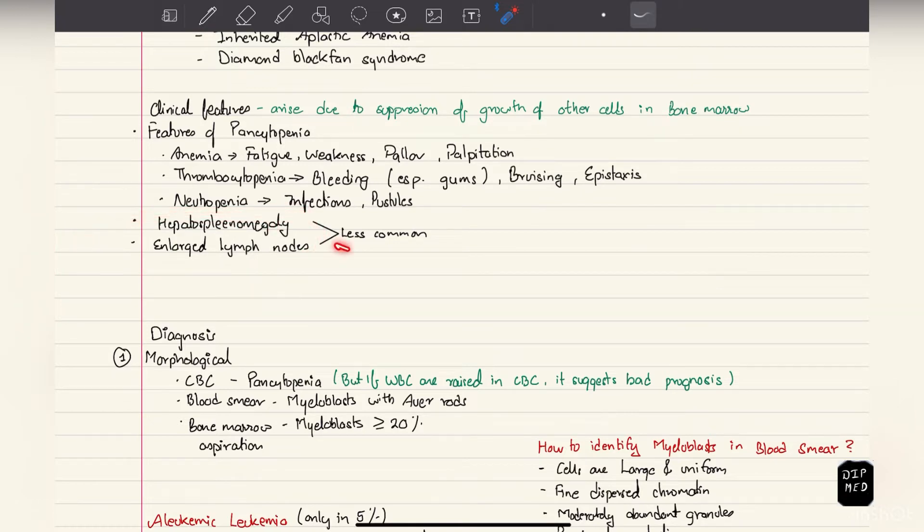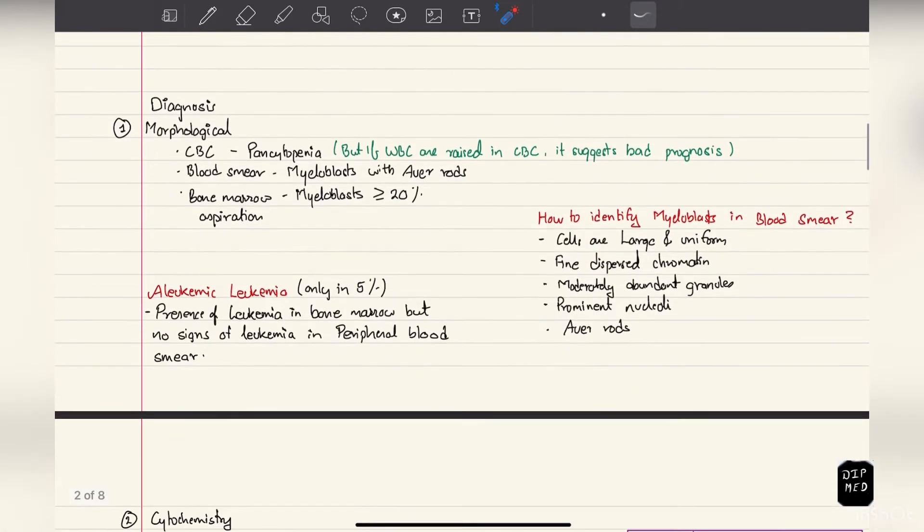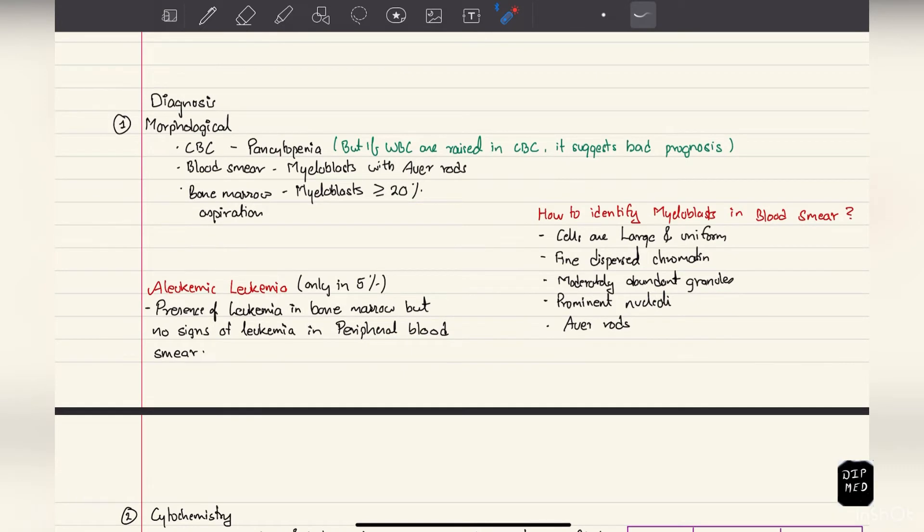Coming on to the diagnosis part: morphologically, on complete blood count there will be pancytopenia. As I've already mentioned, if WBC counts are raised in complete blood count then it suggests bad prognosis. Blood smear shows myeloblasts with Auer rods. In bone marrow aspiration, myeloblasts will cover more than or equal to 20% of the bone marrow.